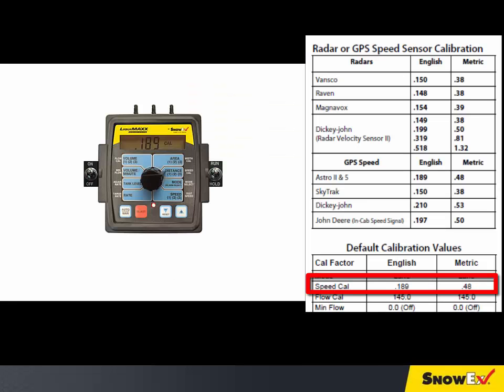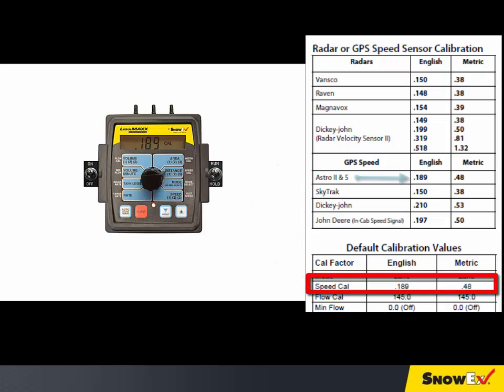Rotate the selector up to speed cal. The speed cal is factory calibrated for use with an Astro GPS speed sensor. The default value is 0.189.